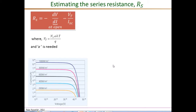The next parameter is the series resistance RS. The equation derived to estimate RS is the negative of dV/dI at the open circuit condition — the negative of the inverse of the IV curve slope at open circuit — minus an additional term VT/ISC.